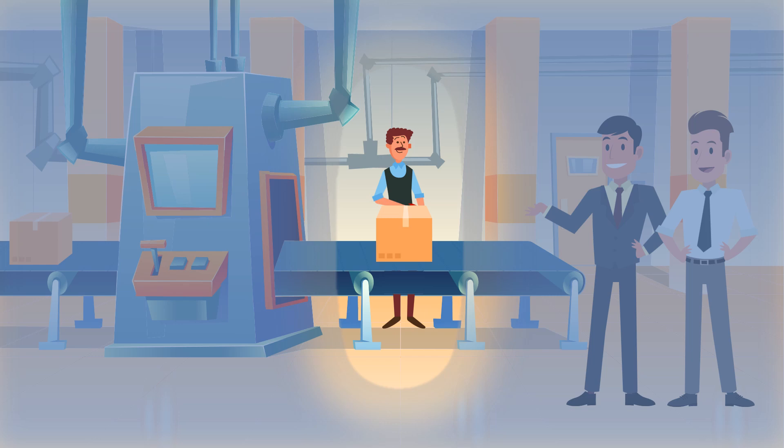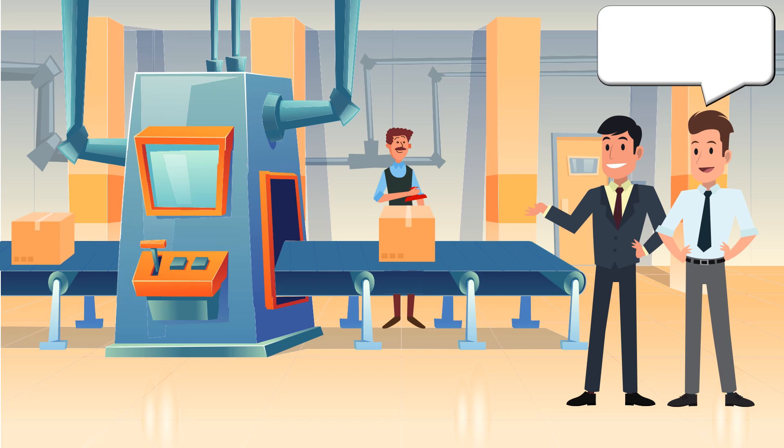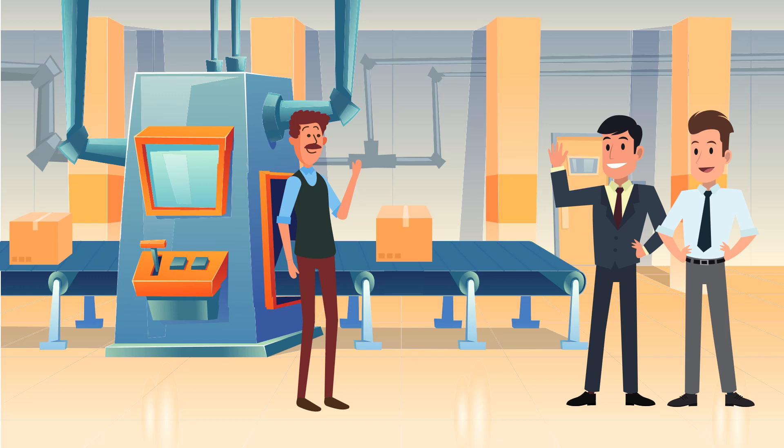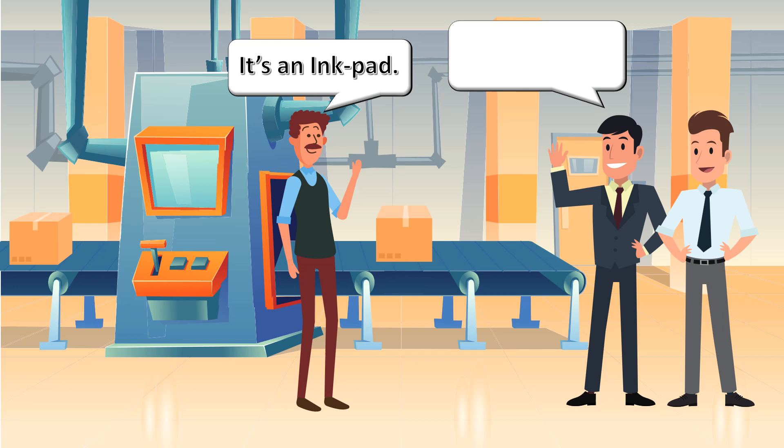Suddenly Tim noticed the operator put his hand under the table and then packed. Did you see that? Tim said. Can you confirm what's under the table? The supervisor asked the operator and he replied, sir, there is an ink pad.